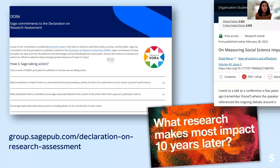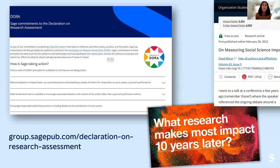Sage, which is a proud signatory of DORA, is honoring longer-term and alternative metrics, working on new technologies that will allow the research community to more easily track their outside impact — watch this space, it's coming out in the fall — and engaging with thought leaders like our panelists in discussions on how we can do more. If you have projects, events, or ideas in this space that could use our support, I'd love to hear about them.